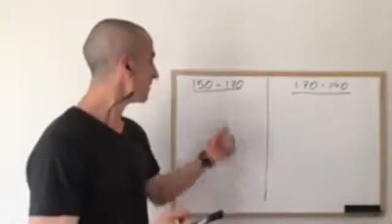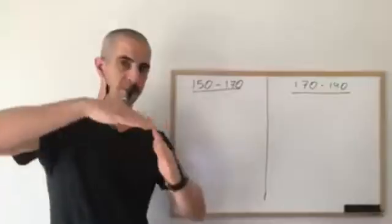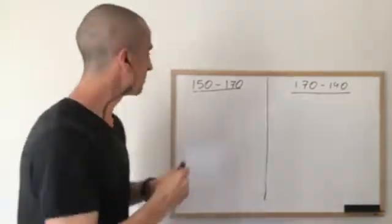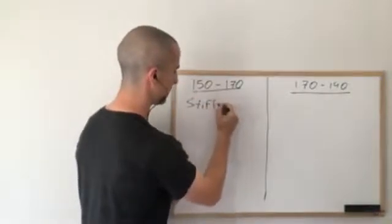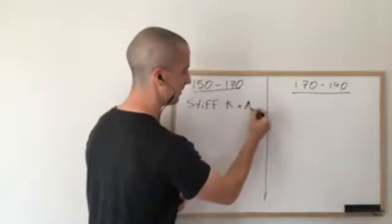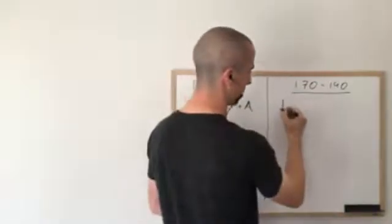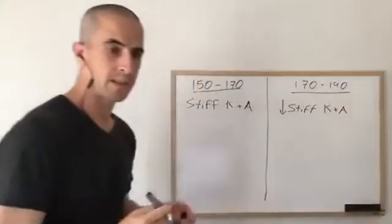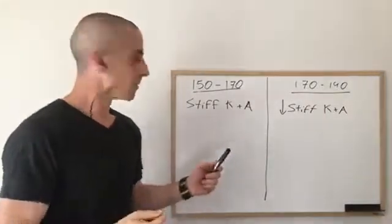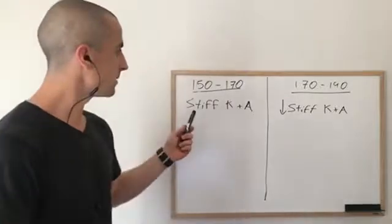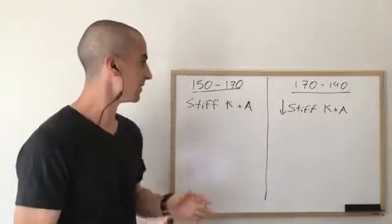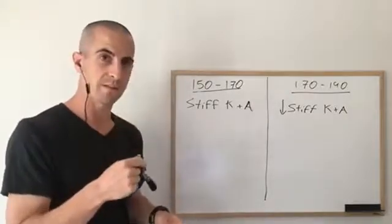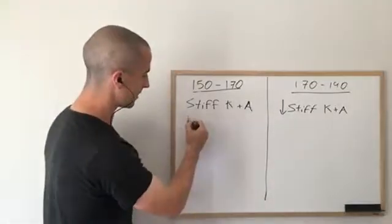At a lower cadence, they found that runners were typically landing with a slightly straighter and stiffer knee, and a slightly stiffer ankle as well. On the higher cadence side, the joints are less stiff. The second finding was that at the lower cadence, runners were over-striding a little bit more — we talked about over-striding in our Facebook Live last week — whereas at higher cadence there is reduced over-striding.